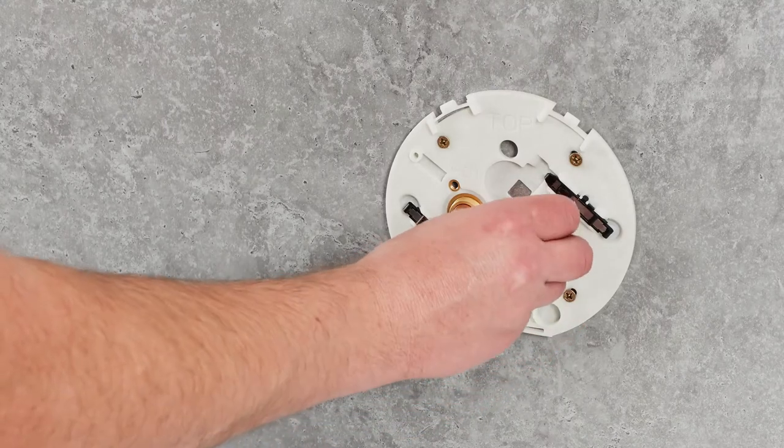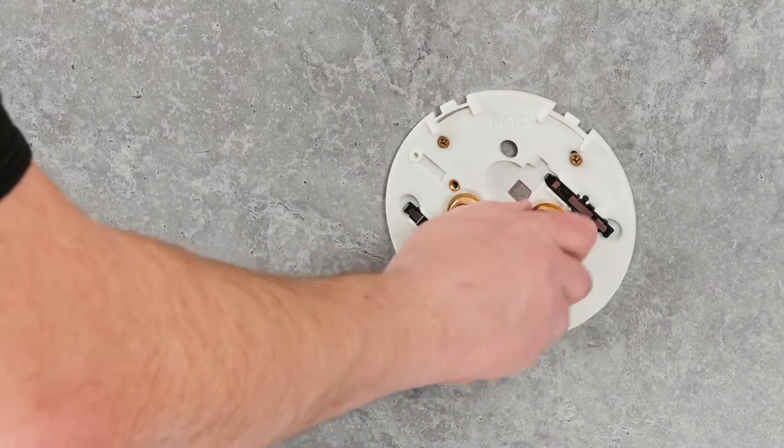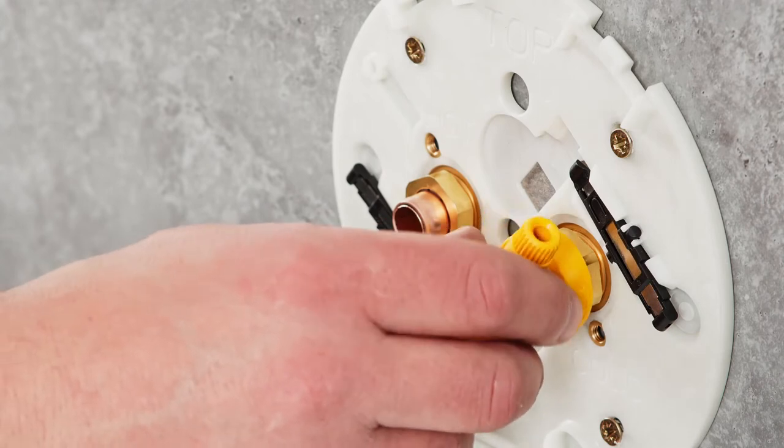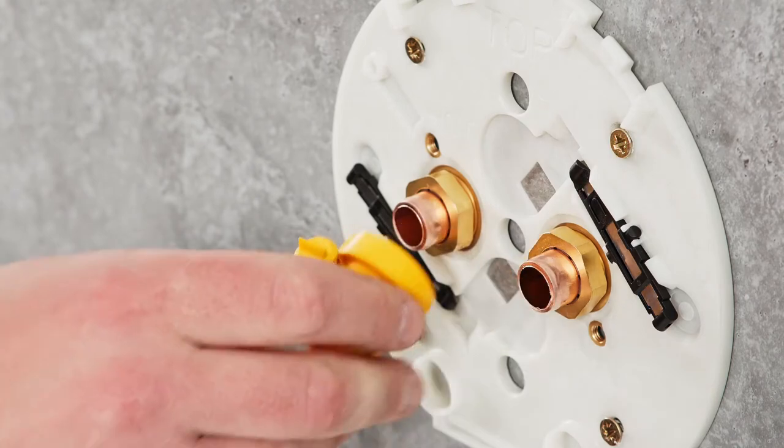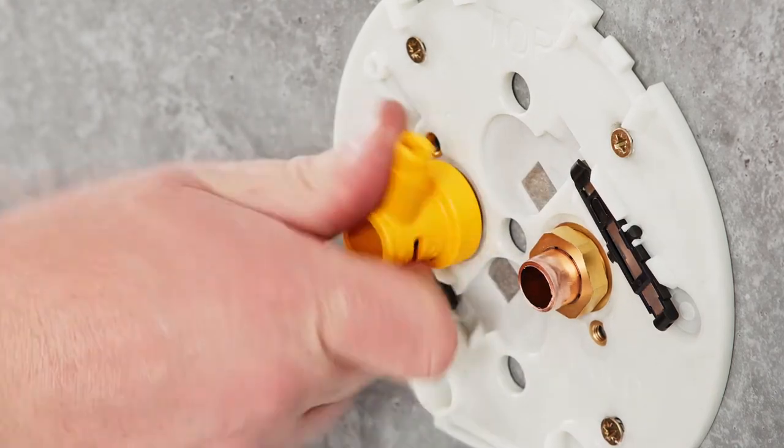Checking that the supply pipework now measures 12.5mm from the backplate surface, the retaining nuts can be fitted and tightened into place using the installation tool provided. These need only be hand tight.